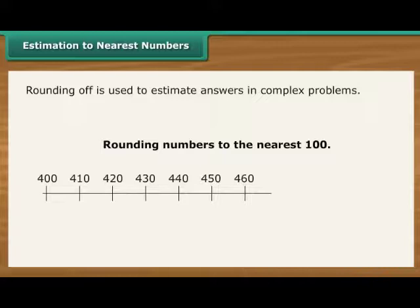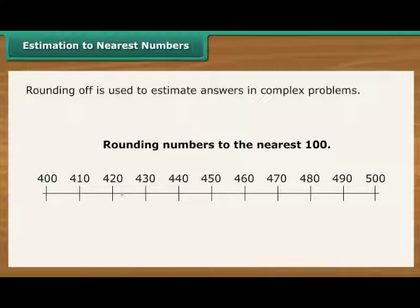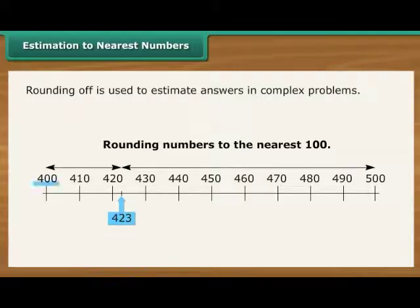Rounding numbers to the nearest hundred means finding which hundred they are nearest to. For example, 423 rounded to the nearest hundred is 400.